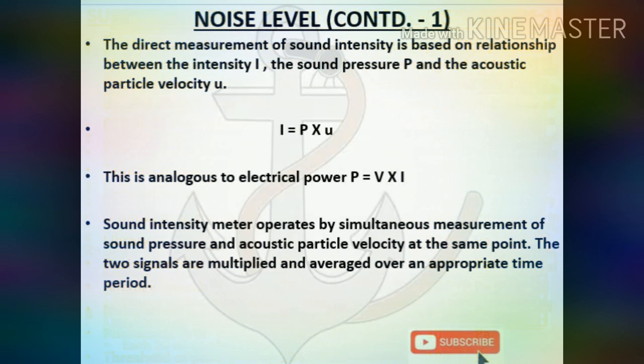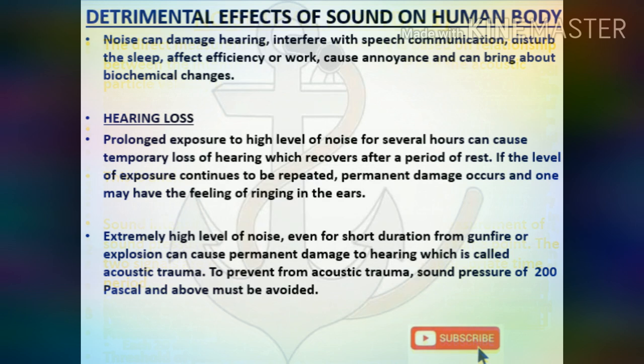The direct measurement of sound intensity is based on the relationship between intensity I, sound pressure P, and acoustic particle velocity U. This is analogous to electrical power P equals VI. A sound intensity meter operates by simultaneous measurement of sound pressure and acoustic particle velocity at the same point. The two signals are multiplied and averaged over an appropriate time period.